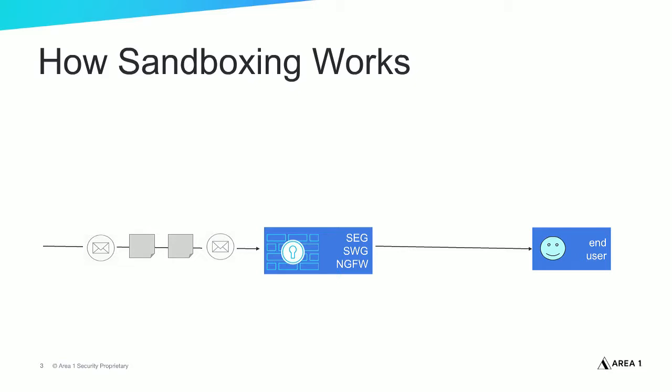Let's start by looking at how sandboxes work in the ideal case. The diagram on this slide shows a simplified view of a network. The email and files to the left are on their way to the end user on the right. The box in the middle represents legacy security infrastructure — typically firewalls, email security gateways, and web proxies deployed to protect from threats.